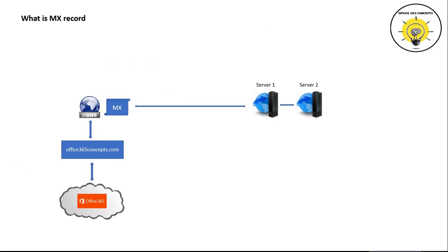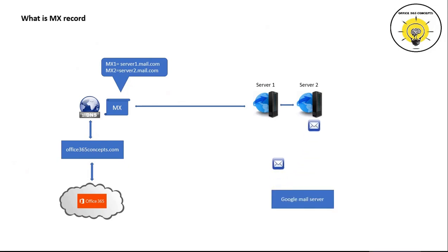MX record is also used for load balancing. Let's assume we have an Office 365 tenant and two email servers responsible for filtering emails. We can publish multiple MX records for one domain so that emails are routed to multiple email servers and incoming emails are equally distributed among them. However, if you have pointed your MX record to Office 365, you should publish only one MX record because Office 365 does not support multiple MX records.